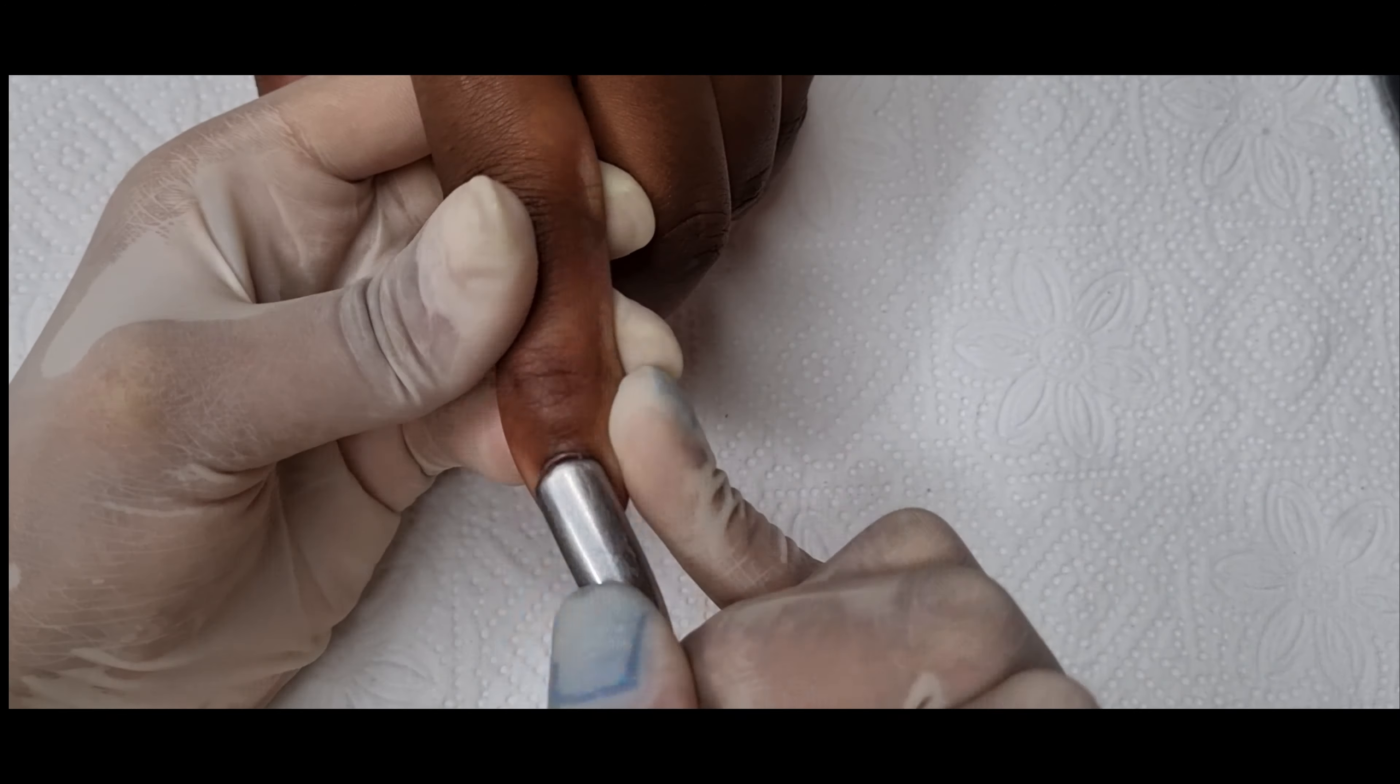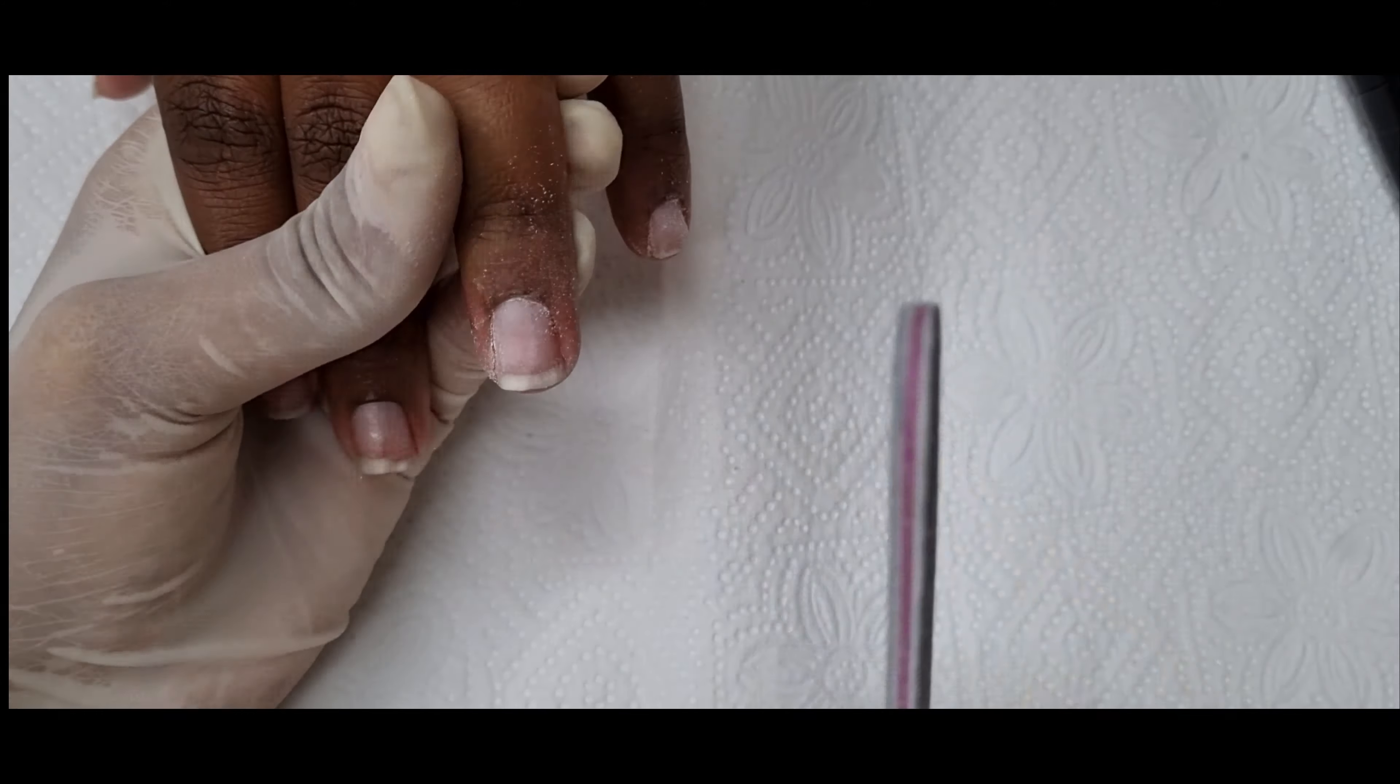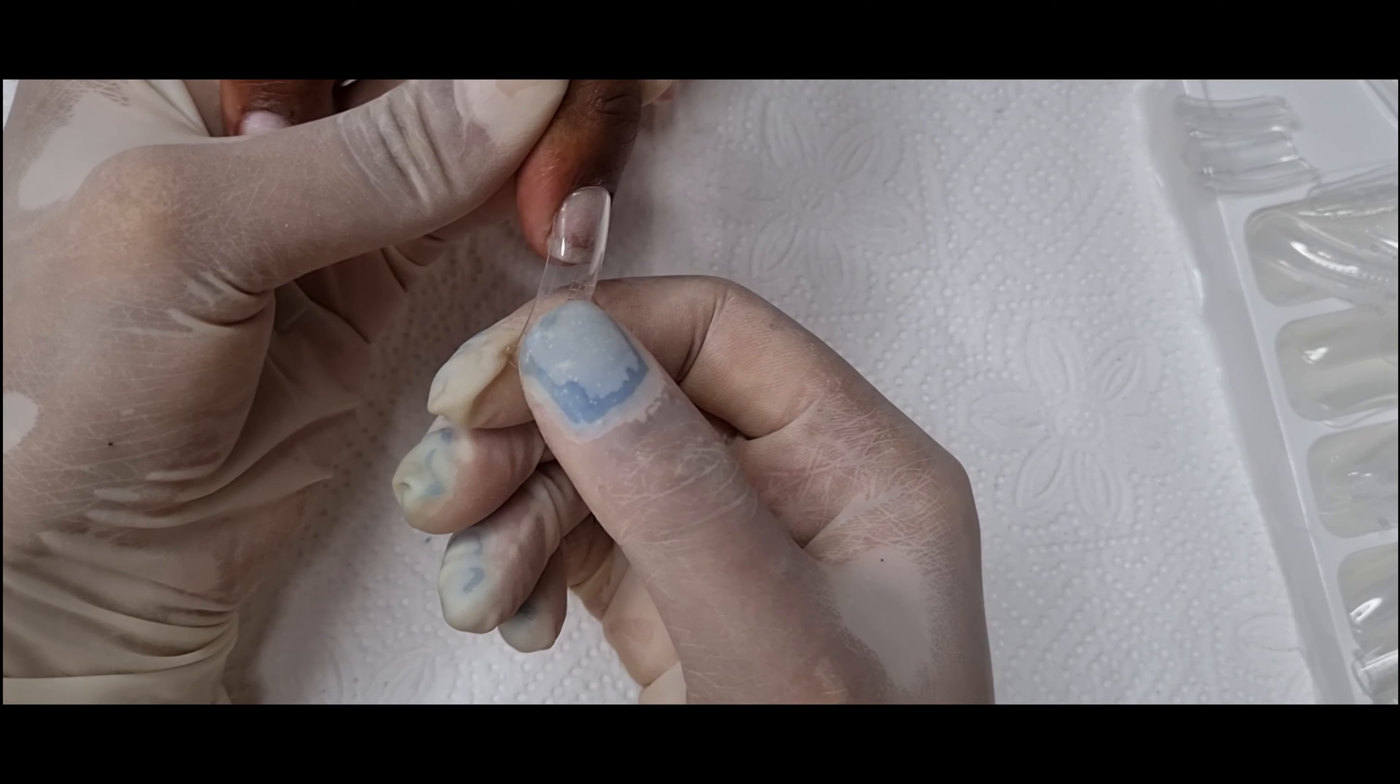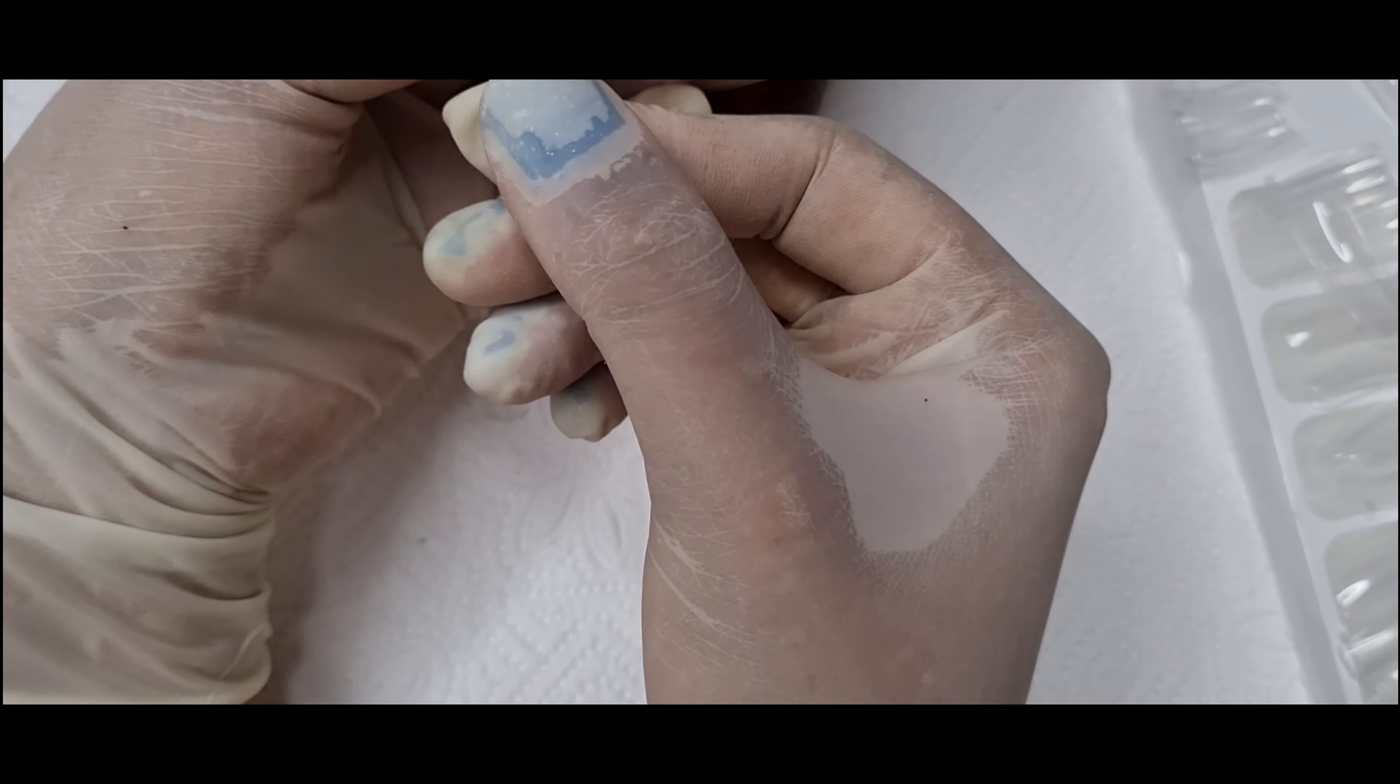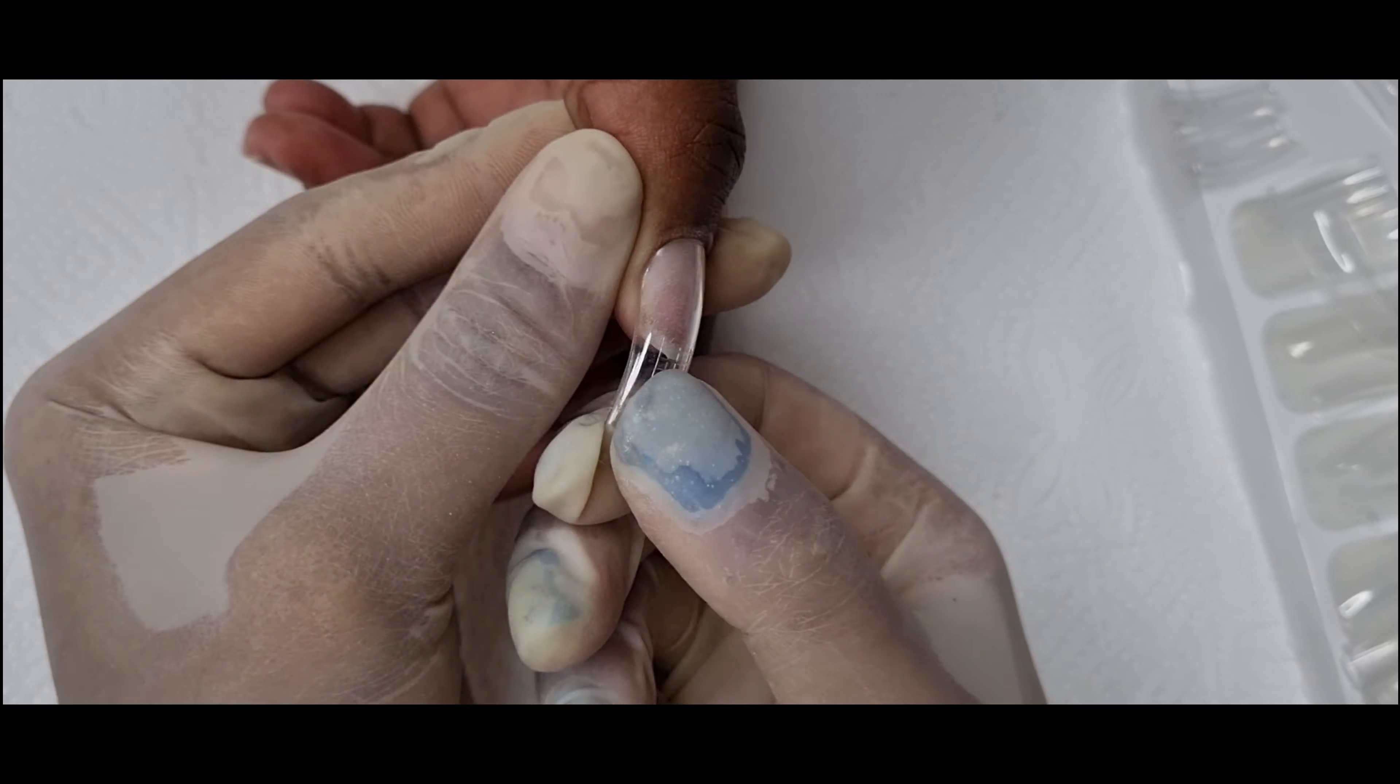So I'd start with some nail preparation by pushing back the cuticles and filing on the 180 grit side any dead skin on the nail plate, as well as removing the shine from the nails. So next stage will be fitting some dual forms to the nails.